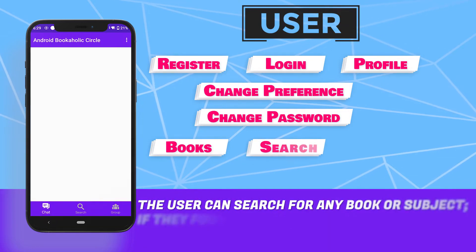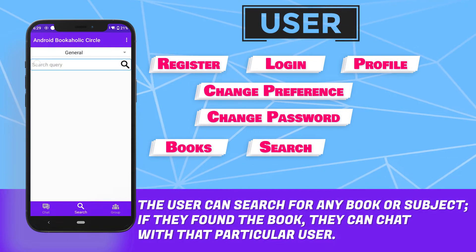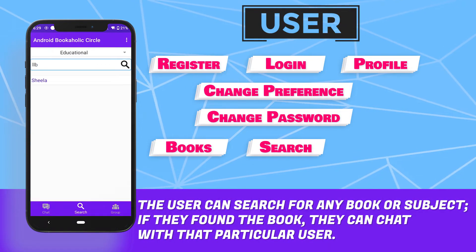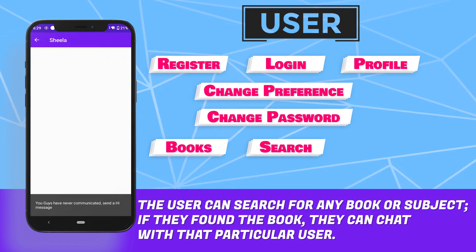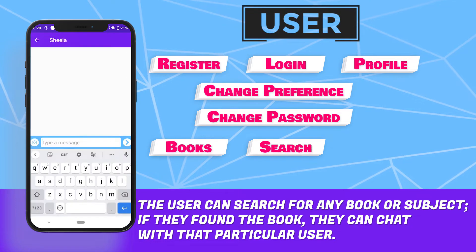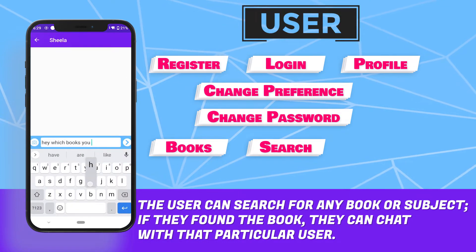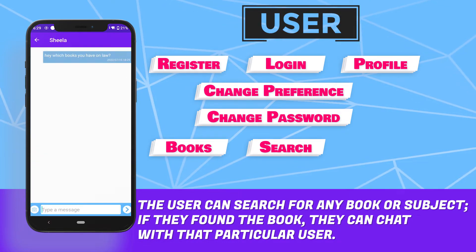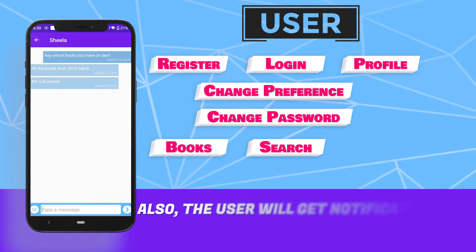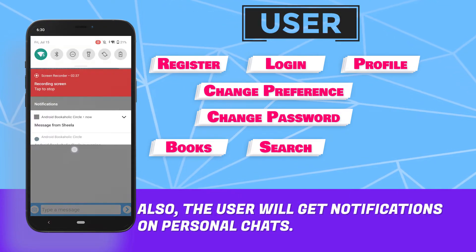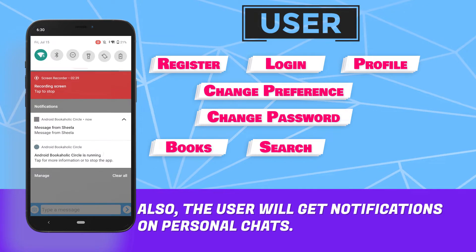The user can search for any book or subject. If they find the book, they can chat with that particular user. The user will also get notifications on personal chats.